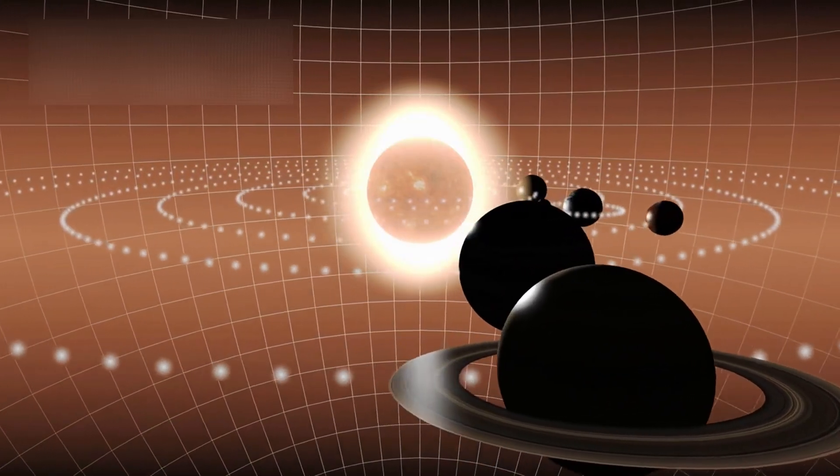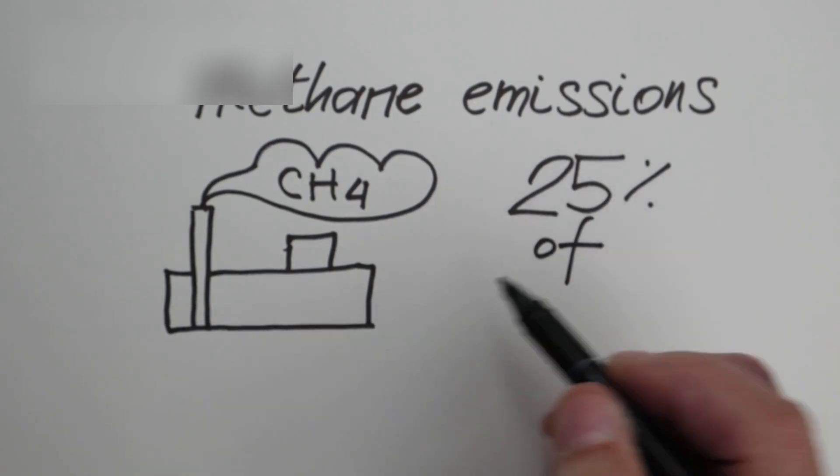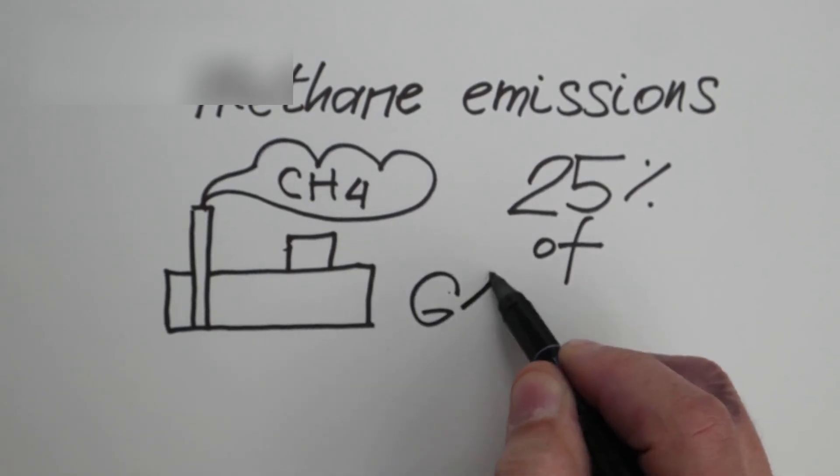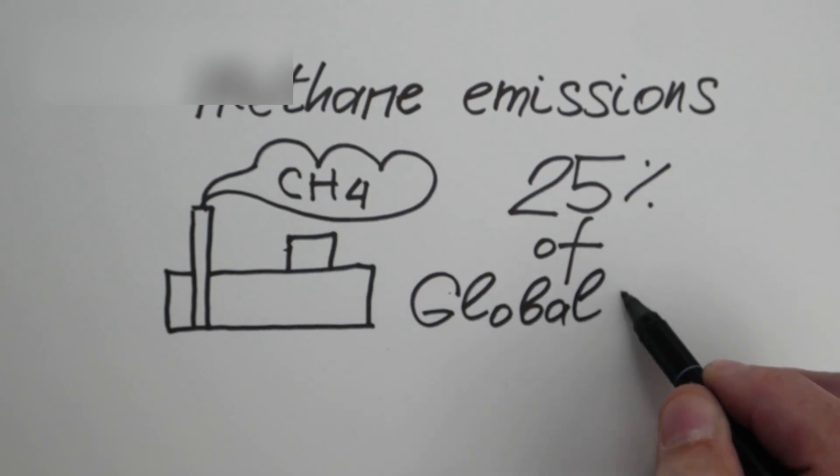Even Pluto's atmosphere deepens the mystery. Though incredibly thin, it is anything but static. Composed primarily of nitrogen, with traces of methane and carbon monoxide, it behaves in ways scientists did not expect for such a small and distant world.